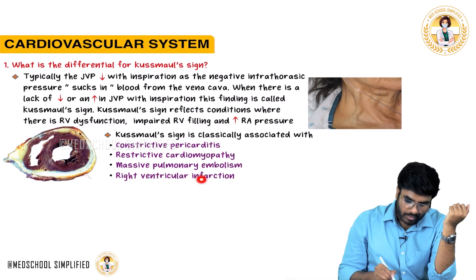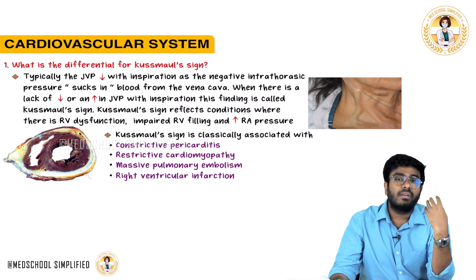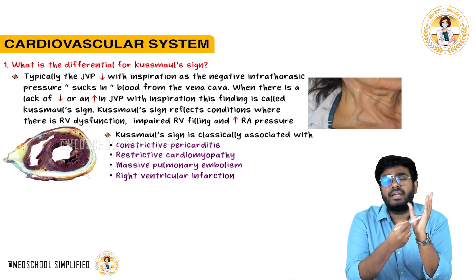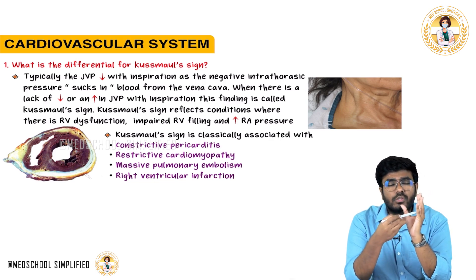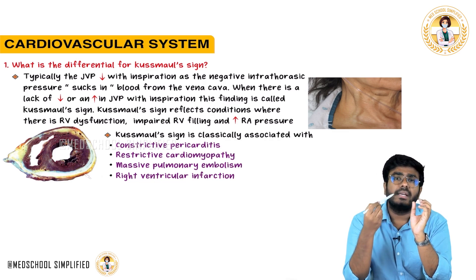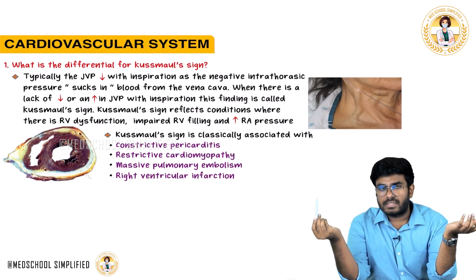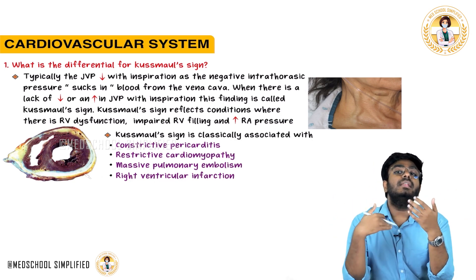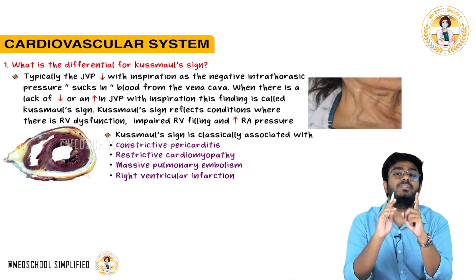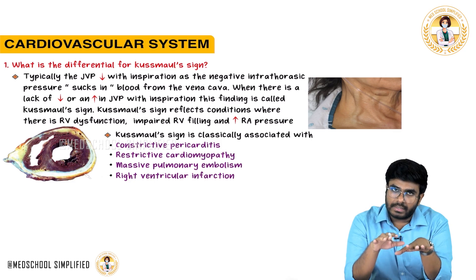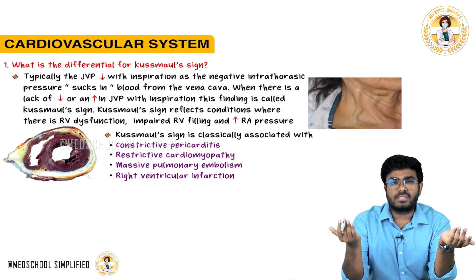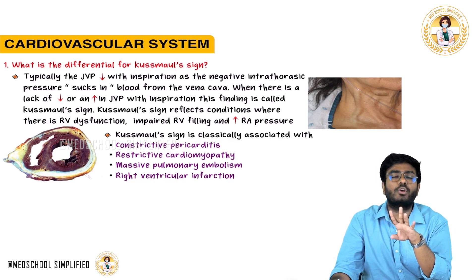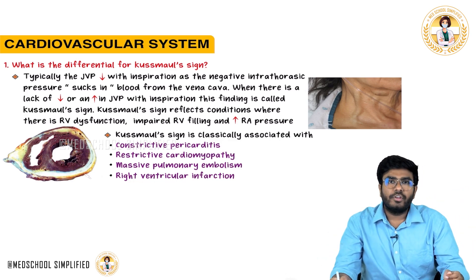And right ventricular infarction — whenever there is any problem with the right ventricle, it cannot contract properly. Pressures generate inside the right ventricle; blood accumulates there. Those pressures generate back into the right atria. Right atrial pressure increases, and automatically jugular venous pressure increases. So these are the conditions in which you will see Kussmaul sign. Simply put, Kussmaul sign is lack of decrease or increase in jugular venous pressure during inspiration. The two main important conditions are constrictive pericarditis and restrictive cardiomyopathy. Hope the video is helpful. Thank you.